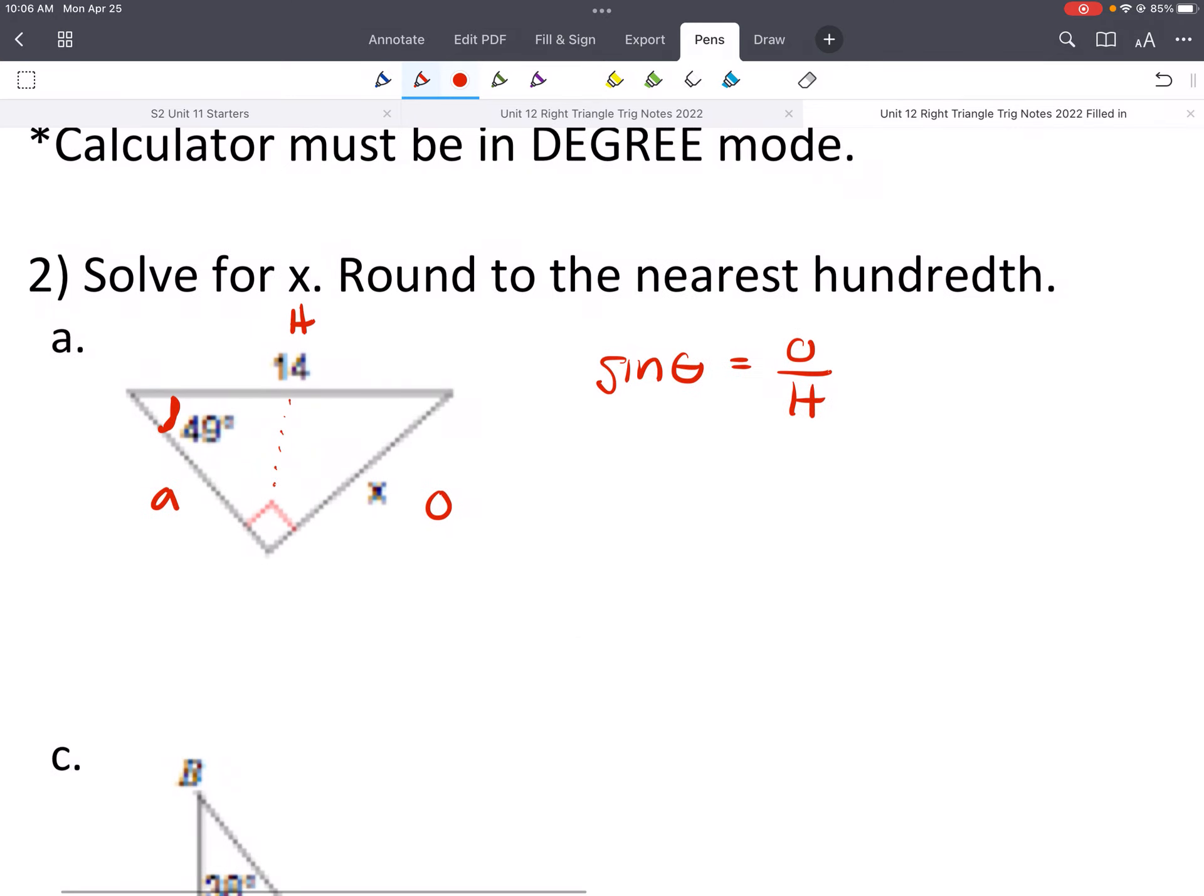So sine of theta equals O over H. So we know two of the three things. So the three things, the three variables that we have is the theta, the angle, the O, and the H. So if we have two of the three things, then we can solve for the third. So here we're going to substitute all the stuff that we do know. We have sine of 49 is equal to O, which is X, over H, which is 14. So we have everything in except we do not know what X is.